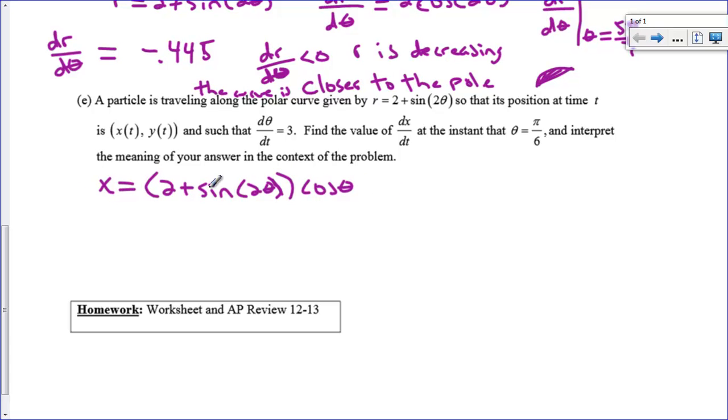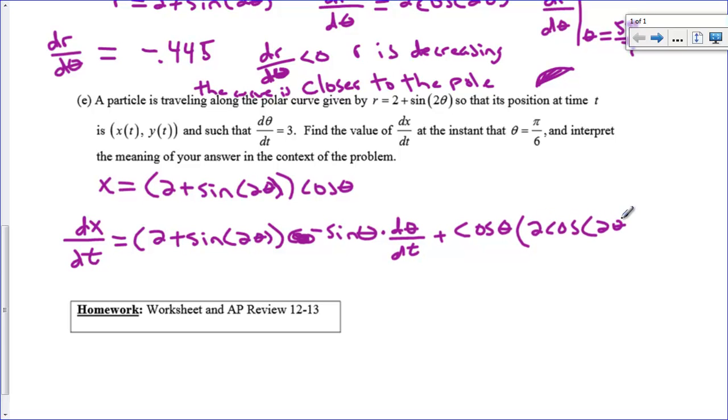So I'm going to have to d/dt this equation. And if you d/dt this, I'm going to have to use the chain rule by saying that the derivative of θ is dθ/dt. So dx/dt is going to equal, through the product rule here, the first function (2 + sin(2θ)) times the derivative of the second. The derivative of cosθ is -sinθ times dθ/dt. And then plus the second function cosθ times the derivative of the first. And the derivative of 2 + sin(2θ) is 2cos(2θ) times dθ/dt.